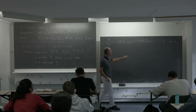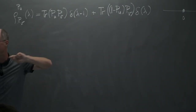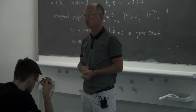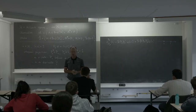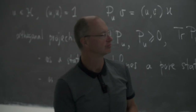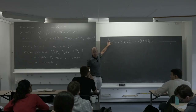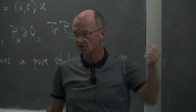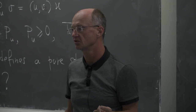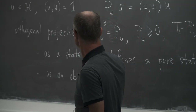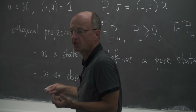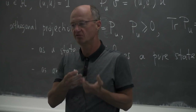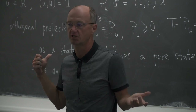The observable P_u measures a very simple thing: whether the system is in the state defined by this projection. The projection has a double role — it is both an observable and a state — and the observable measures whether we are in the state defined by the same projection.